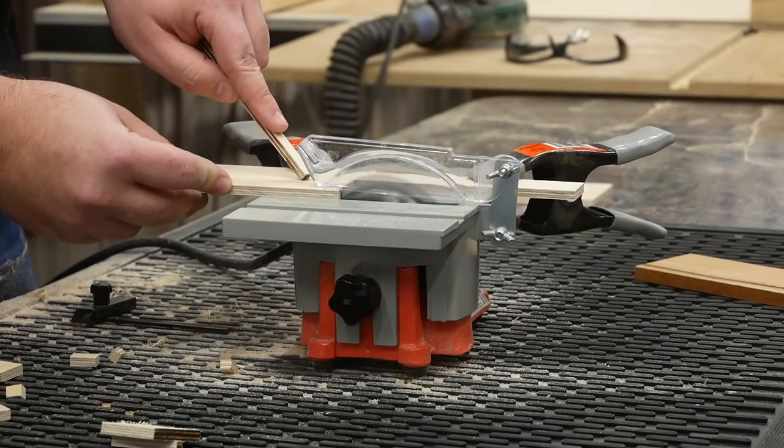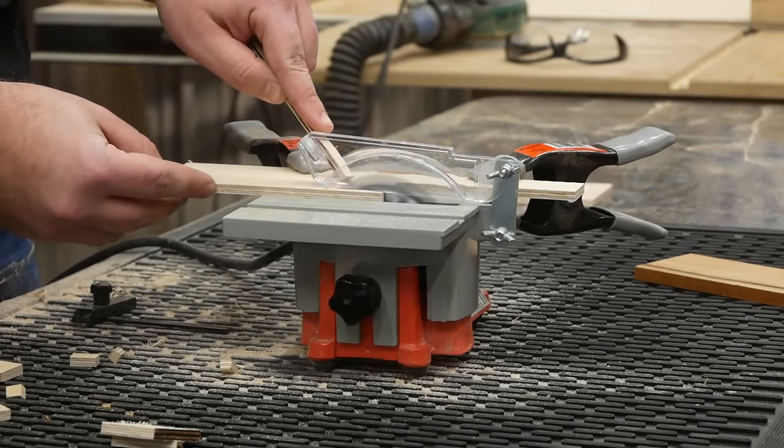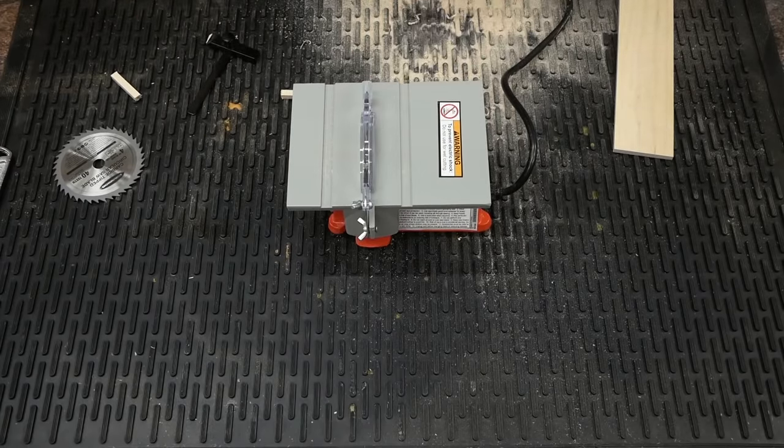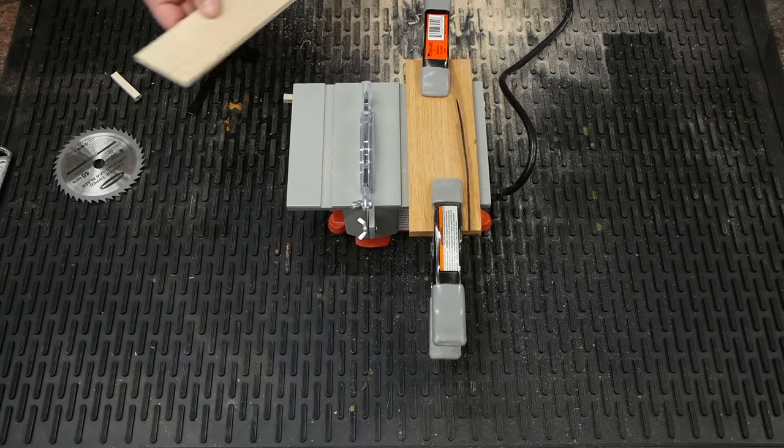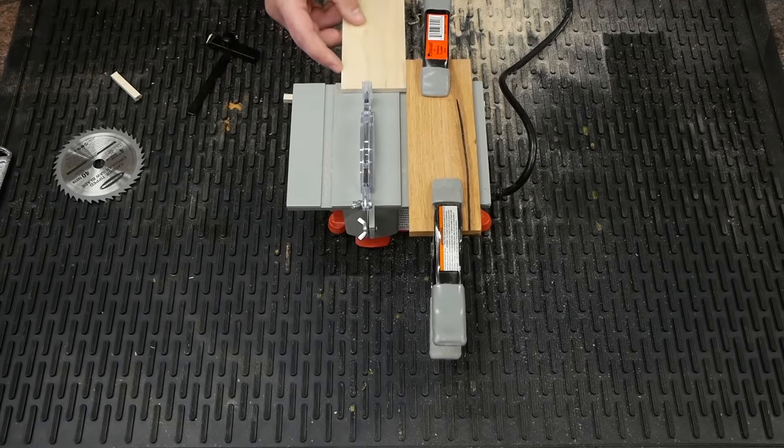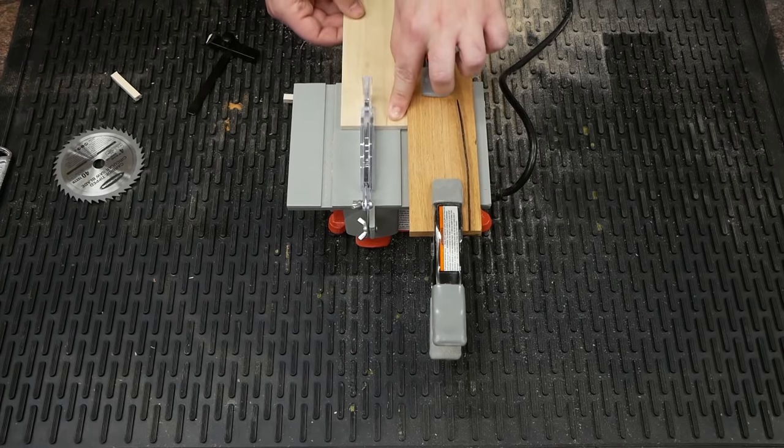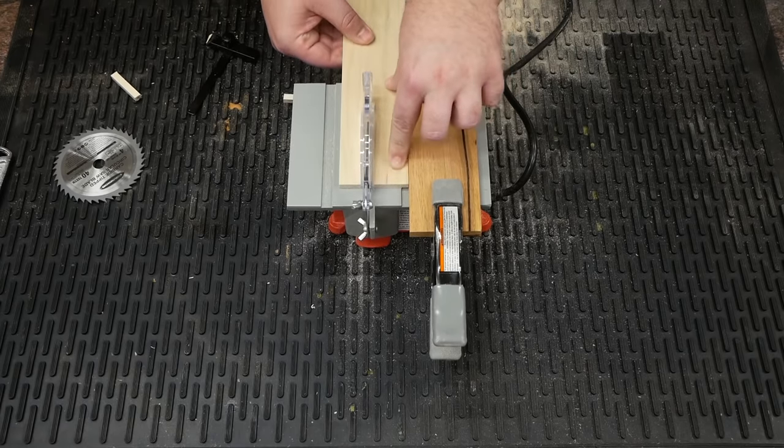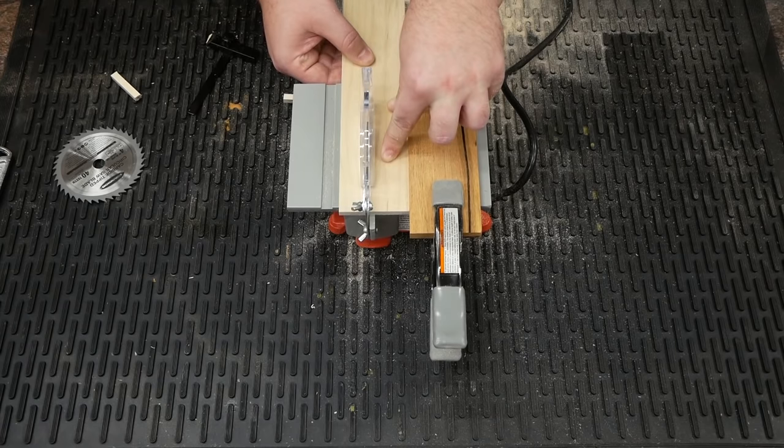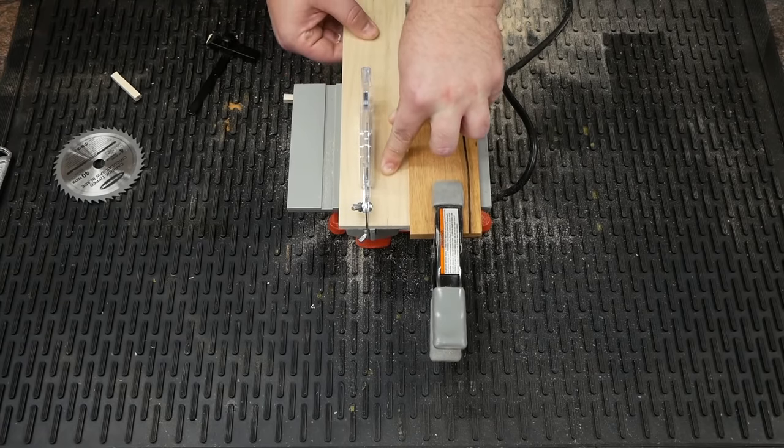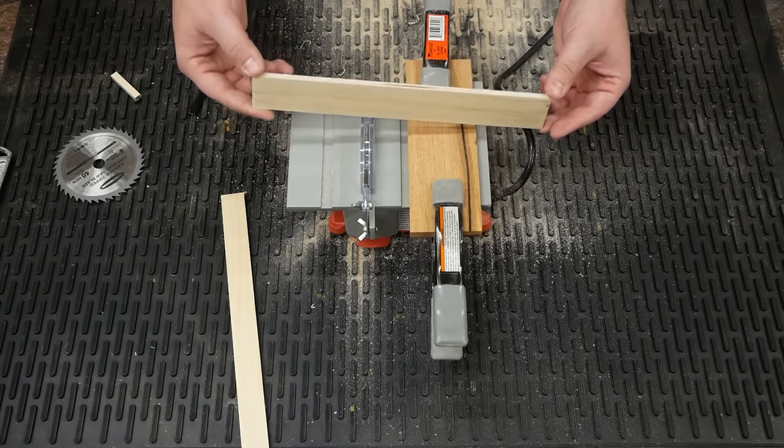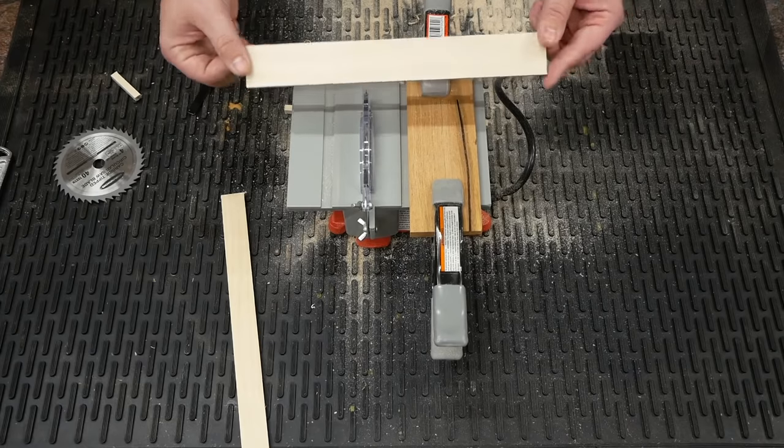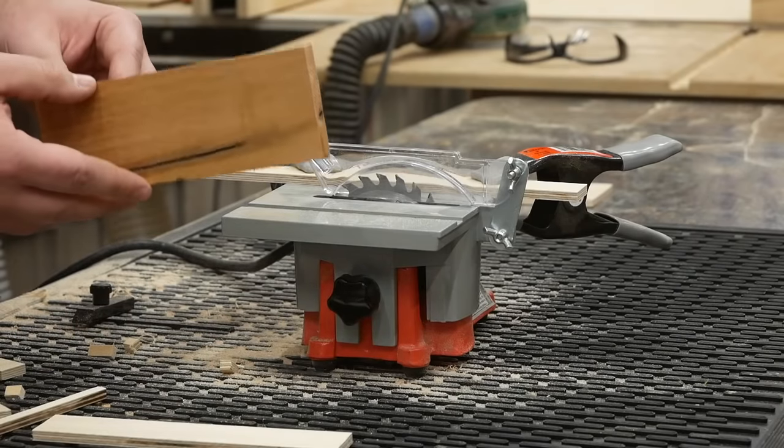However, it's still absolutely terrible. One benefit is it's really quiet. It actually didn't do too terribly. It did cut through it. The motor is a bit weak. By a bit, I mean substantially. But it cuts through it. It cut through this very poorly, so let's try something harder. This 3/8-inch thick piece of mahogany.